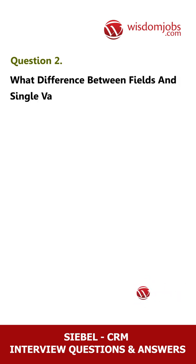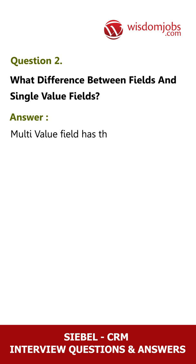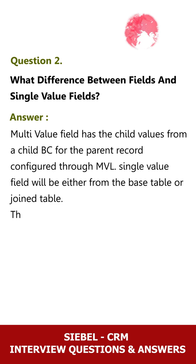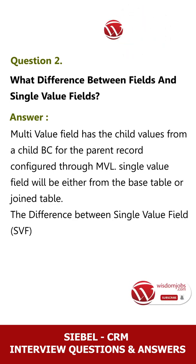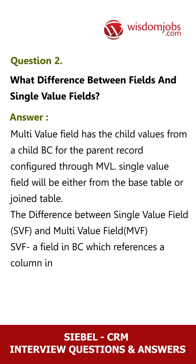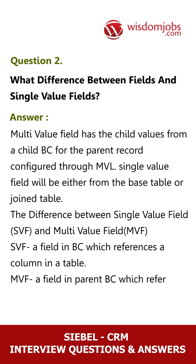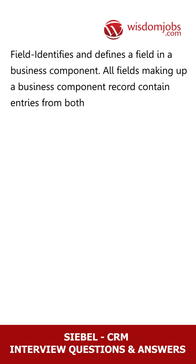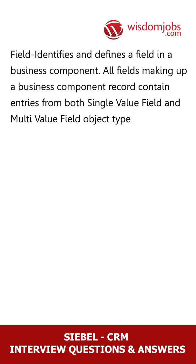Answer: A multi-value field has child values from a child BC for the parent record, configured through MVL. A single value field will be either from the base table or join table. SVF is a field in a BC which references a column in a table. MVF is a field in a parent BC which references a field in a child BC. Fields make up a business component record and contain entries from both single value field and multi-value field object types.